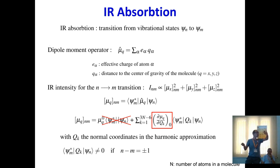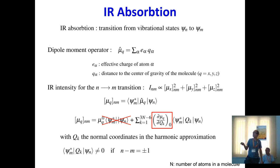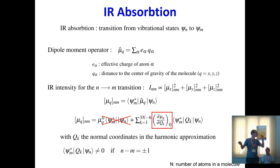Writing the normal coordinates in terms of ladder operators, you see that this matrix element is non-zero only if you excite neighboring states — i.e., Δn = ±1 in the harmonic approximation. Beyond the harmonic approximation (anharmonic case), transitions to non-neighboring states become possible. This is the fundamental selection rule for infrared absorption.